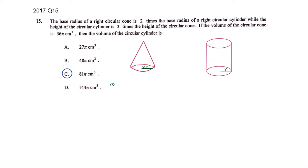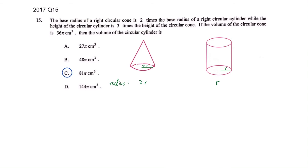Radius of the cone is 2r and cylinder is r. Next step, while the height of the cylinder is three times of the cone. So if this height is h, then this height will be 3h. All right, height will be, this is h and this is 3h.